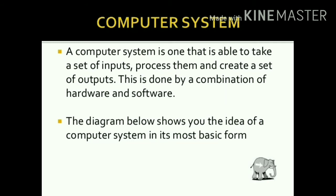So jo ye process hai, ye hardware and software ke through hoti hai. What is hardware? Hardware are the physical parts of a computer system. Jo physical parts hoti hai computer system ke — jaise ki keyboard, mouse, monitor, printer — these all are hardware.